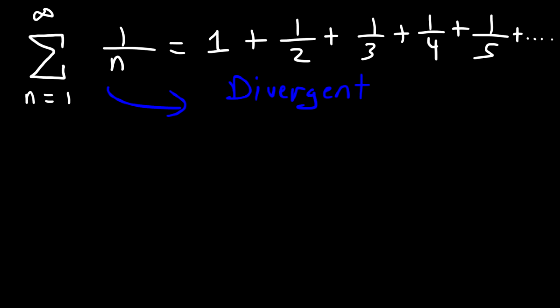Now, if you're thinking about doing the divergence test to prove that it's divergent, it's not really going to work out too well. If we take the limit as n approaches infinity for a sub n, so a sub n is 1 over n, this will equal 0.